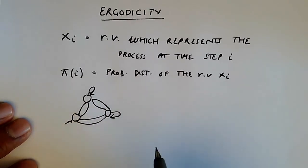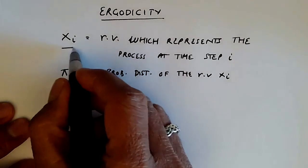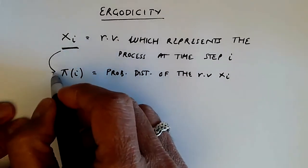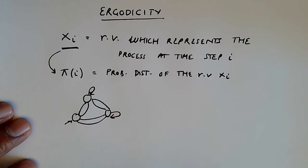If we were to look at the random variable xi, its corresponding probability distribution, pi i, was somehow stable. And so we could say this is the expected distribution of this random variable as we look at a chain that has been operating for a long time.